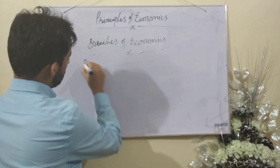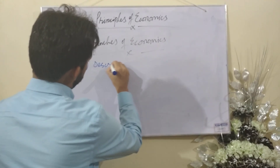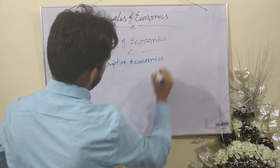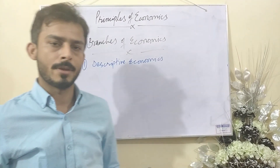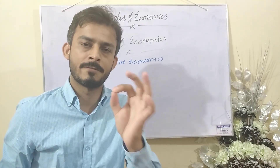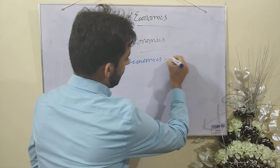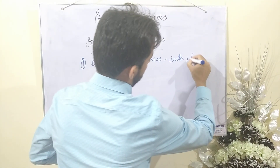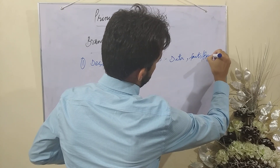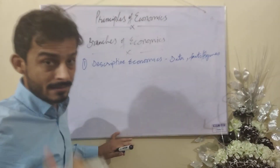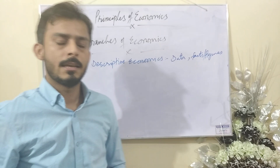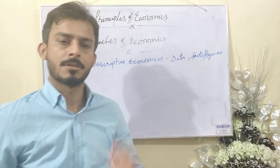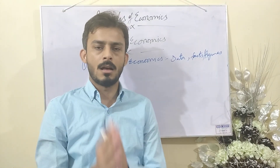Number one is descriptive economics. According to this branch, descriptive economics only describes the facts and figures. The data is collected regarding any economic problem — facts and figures are collected and described. This branch is considered as descriptive economics.